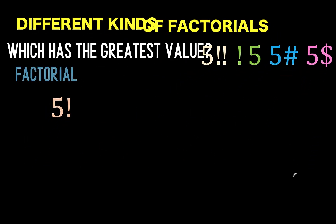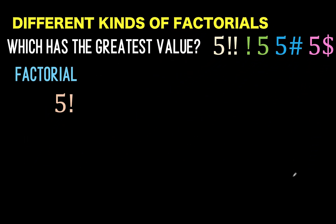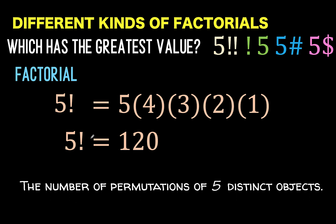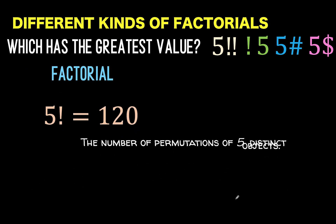Now let's solve this problem together. There are so many different kinds of factorials and 5 of them are in this video. Let's begin with 5 factorial. By definition, 5 factorial is equal to 5 times 4 times 3 times 2 times 1 — you multiply the natural numbers from 1 up to n. This is equal to 120. The interpretation is that 120 is the number of permutations of 5 distinct objects.